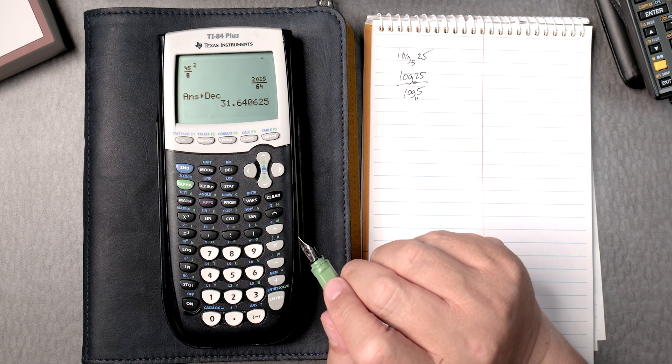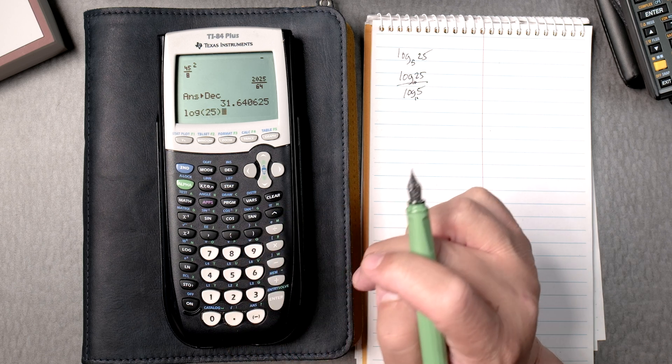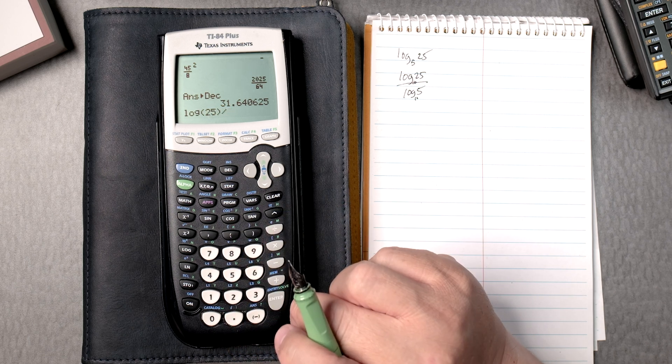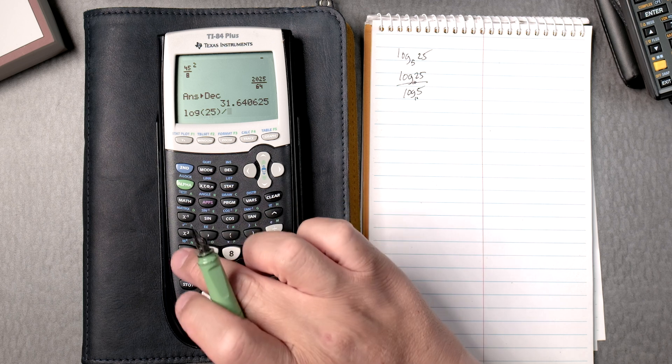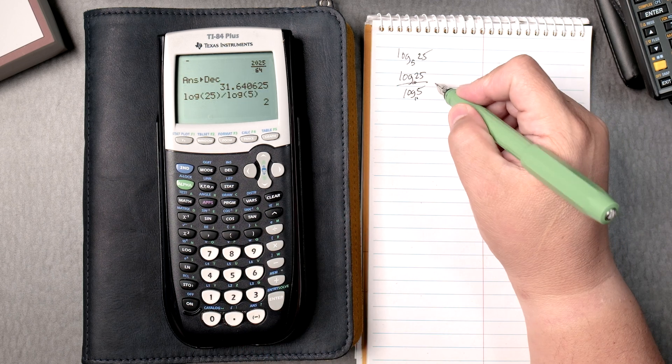So how do we do that? Well, here's log, 25, close parenthesis, divided by log, over here, 5, close parenthesis, enter, gives you 2.